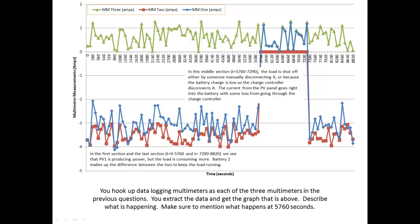In the middle section, from T equals 5,760 to 7,290, the load is shut off, either by someone manually disconnecting it, or because the battery charge is low, so the charge controller disconnects it. The current from the PV panel goes right into the battery with some loss from going through the charge controller.